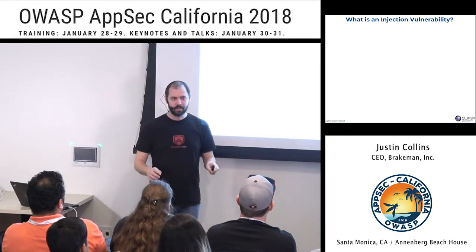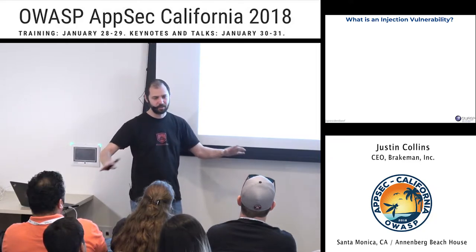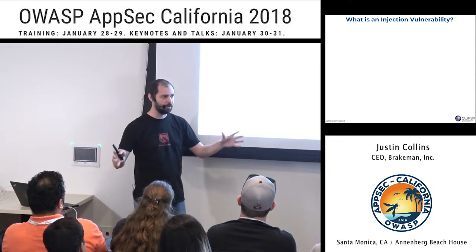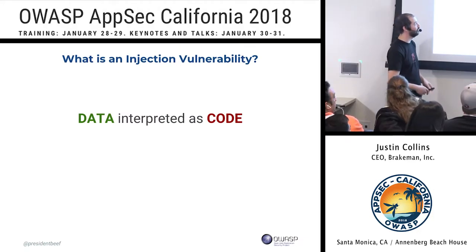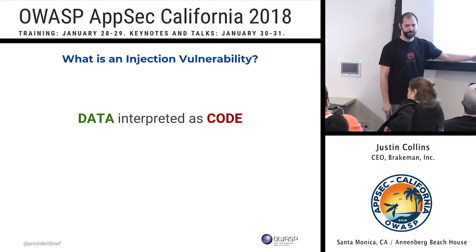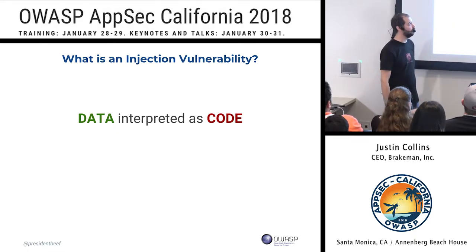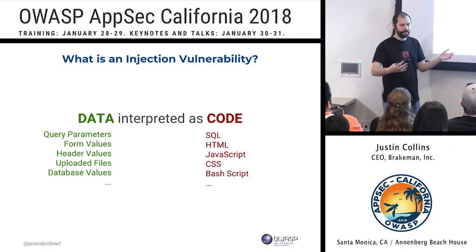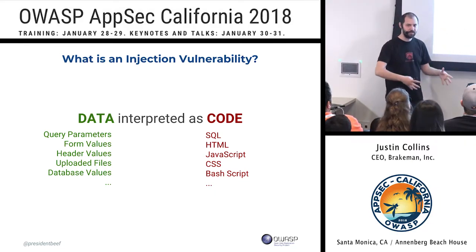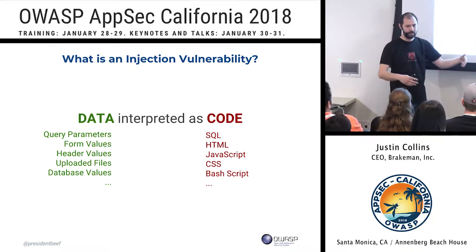Now let's talk about what an injection vulnerability is — so we're all on the same page. My succinct definition: it's when we have data that gets interpreted as code. We have values that should be data — you should not be executing data — but instead it happens, and then we have an injection vulnerability. That data could be query parameters, form values, header values, uploaded files, or even values that come out of the database.